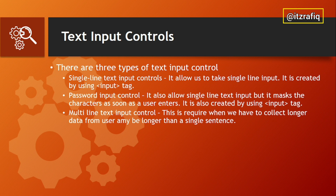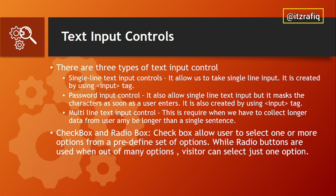Checkboxes and radio buttons are important. A checkbox allows the user to select one or more options from a predefined set of options. A radio button is the same as a checkbox but with one difference — the user can select only one option. So the key difference is: checkboxes allow multiple selections, radio buttons allow only one.